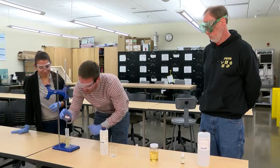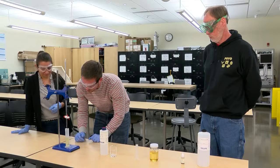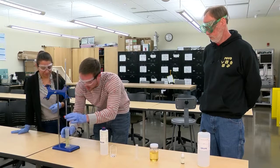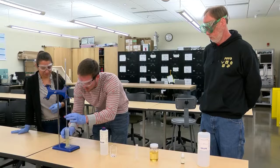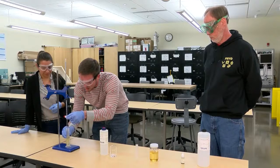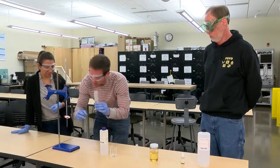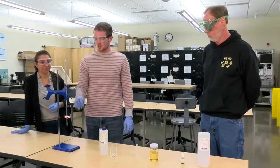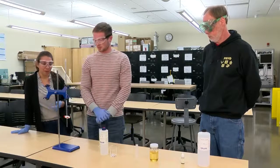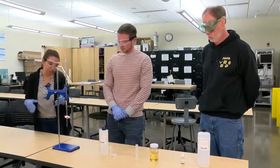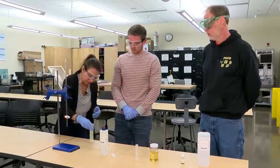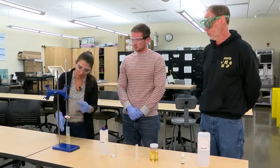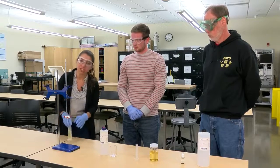Just a couple drops at a time. Once that changes color for about 30 seconds, that's how we know we've completed the process, and then we record how much we've used. This is a very simple process — by mixing it and looking at how much acid was required to change the color, we can determine what we need to know.